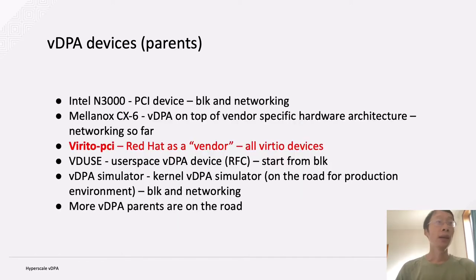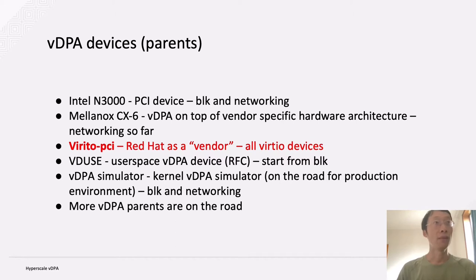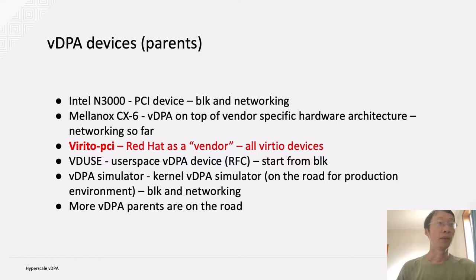We have several VDPA devices right now. For example, we have Intel N3000, which is just a normal PCI device or virtual function — it can do both block and networking. And we also have Mellanox CX6, which is a VDPA implementation on top of vendor-specific hardware and architecture, so it only supports networking.